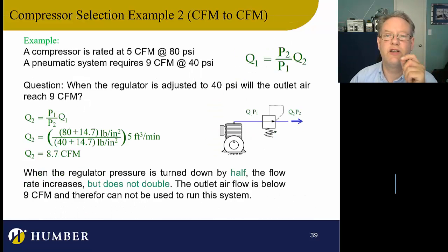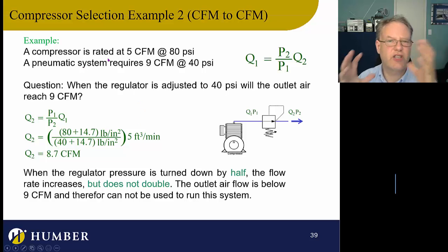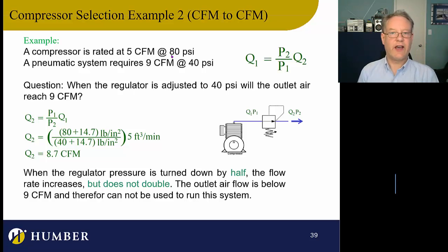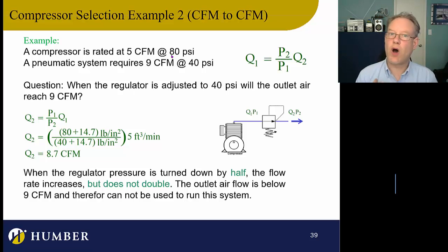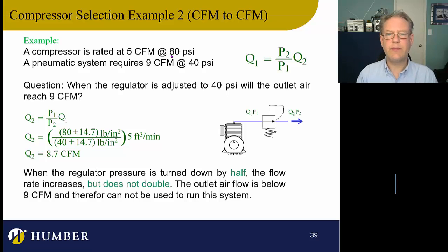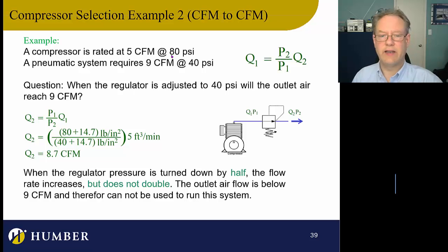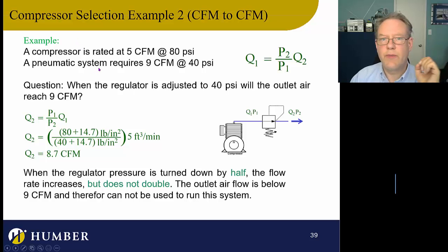Example 2: A compressor is rated at 5 CFM at 80 PSI. The manufacturer says if you set the pressure regulator to 80 PSI, the flow rate will be 5 — because there's a limited amount of power and we're dividing that between flow rate and pressure. But we want this system to run at 40 PSI and we need 9 CFM. Will it work? Just do the math.